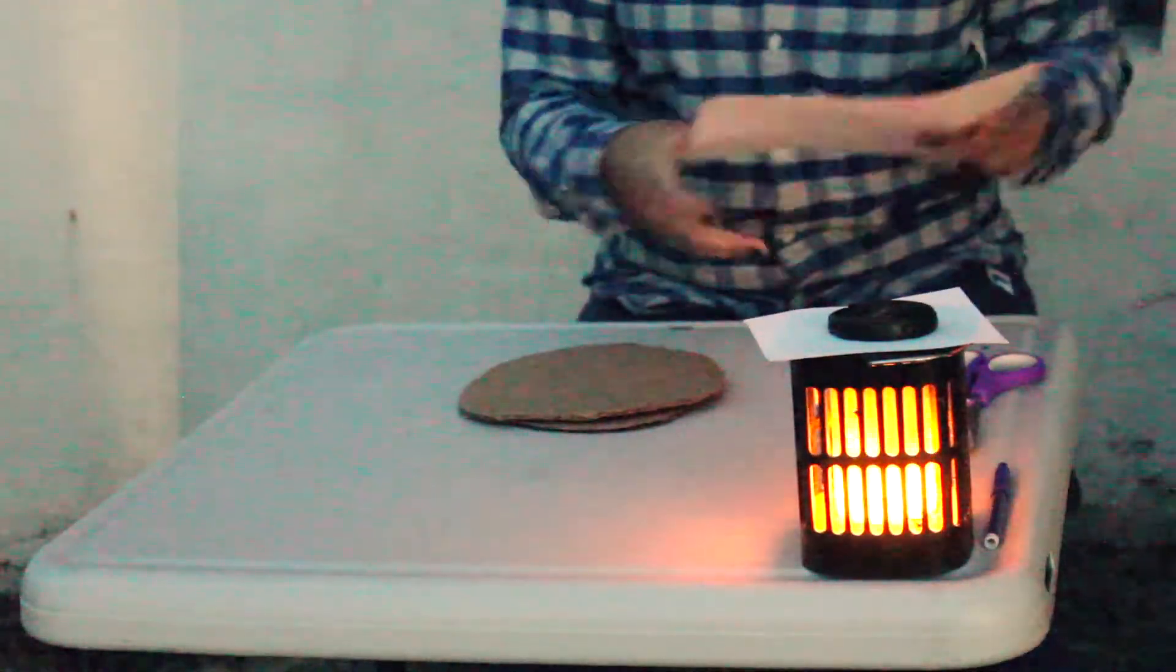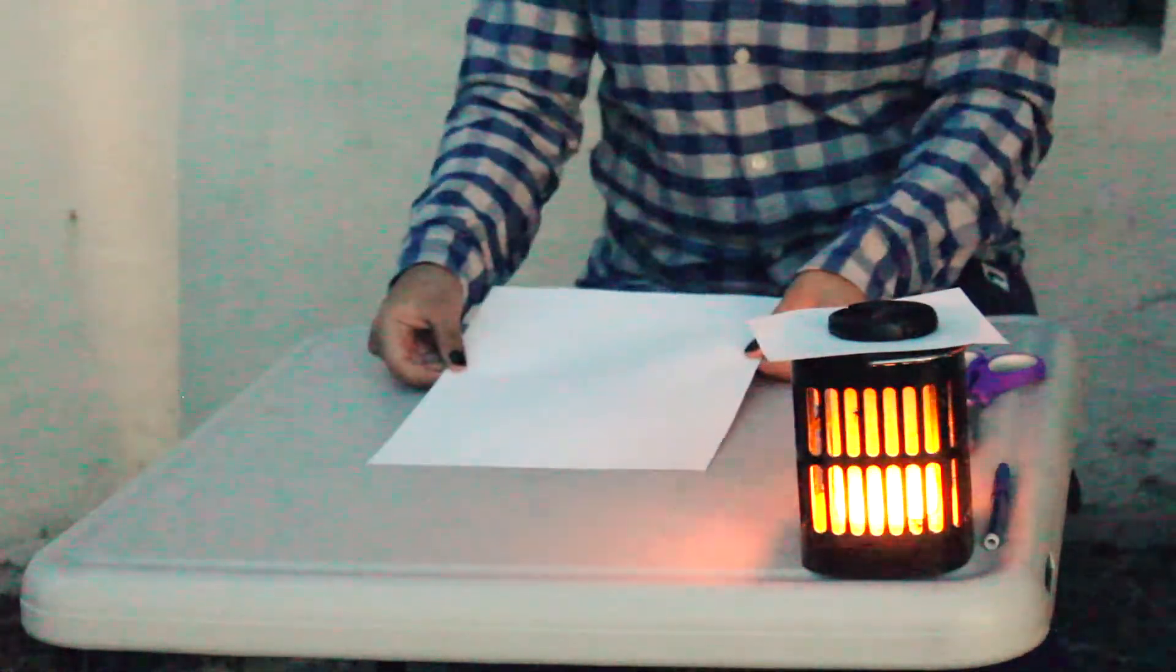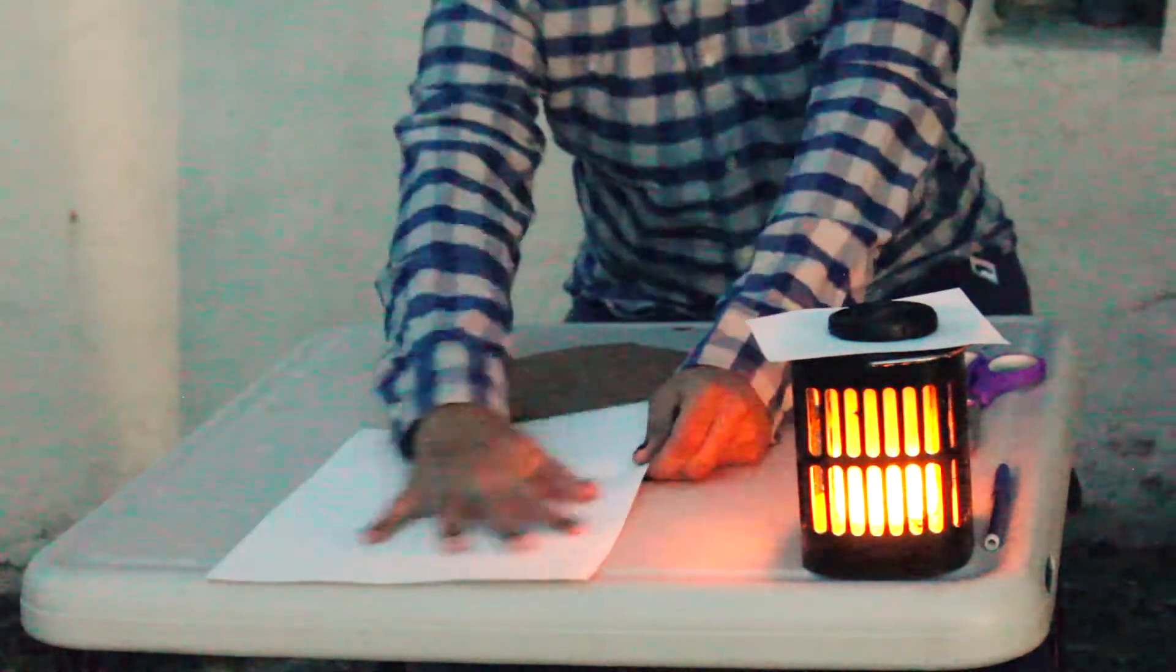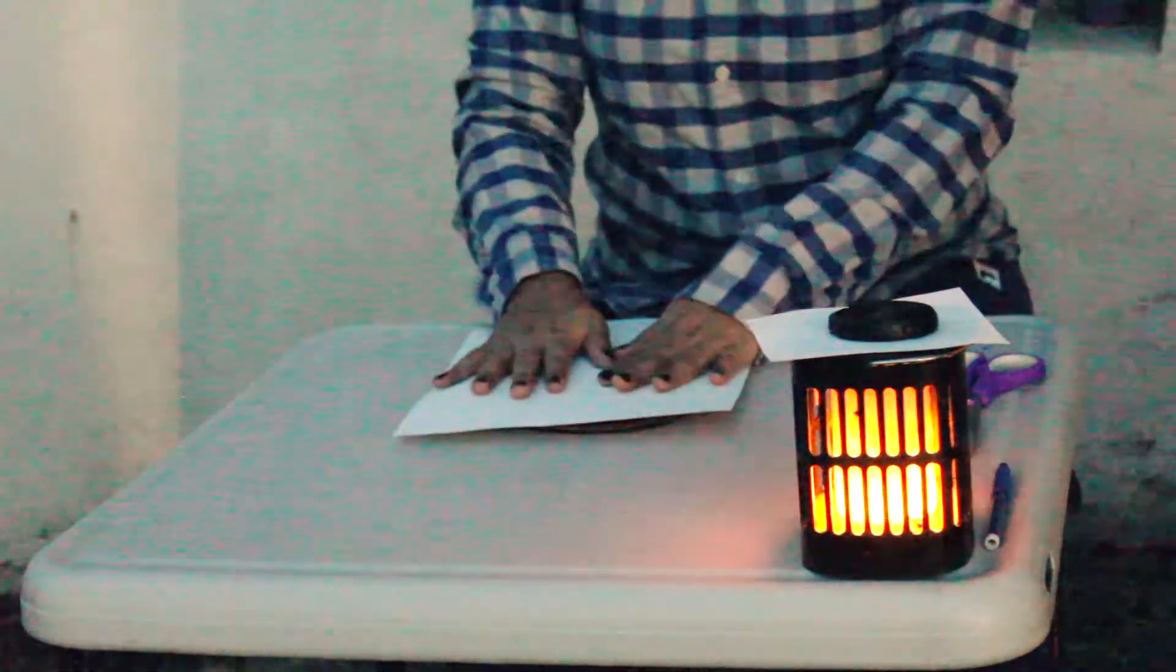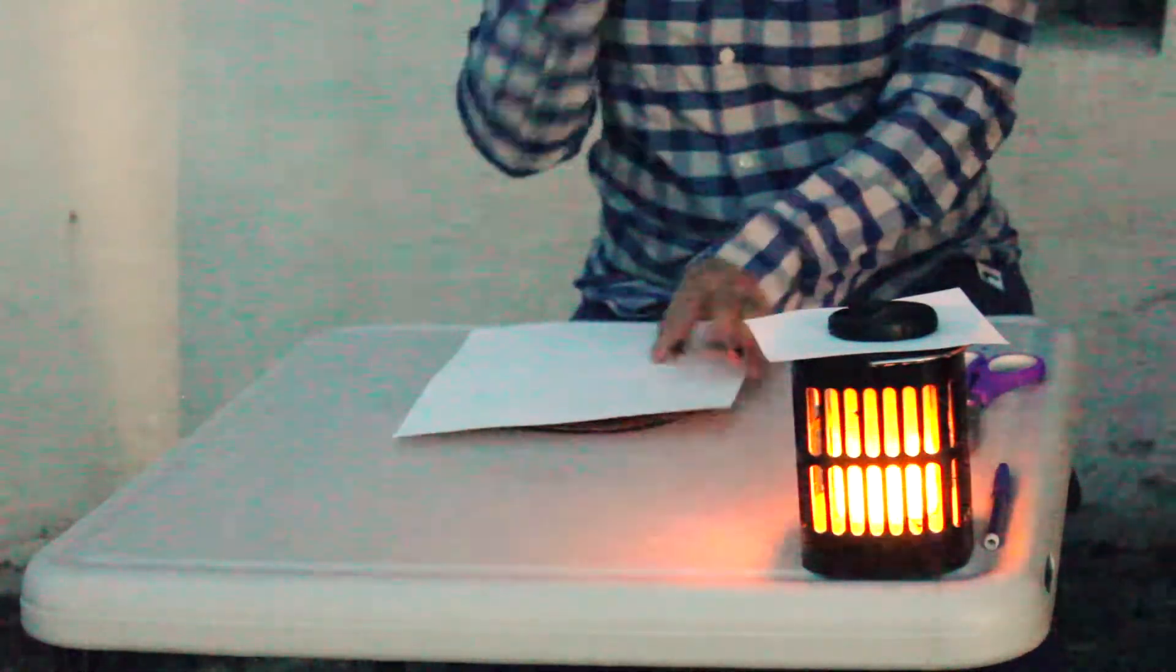Okay, now that I'm all done cutting out both of my circles, I'm going to go ahead and get my sheet of paper. So what we're going to be doing with this sheet of paper is actually tracing one of our circles onto it.